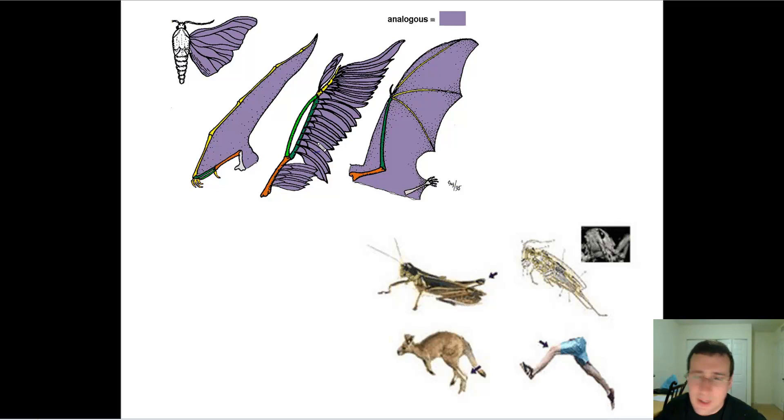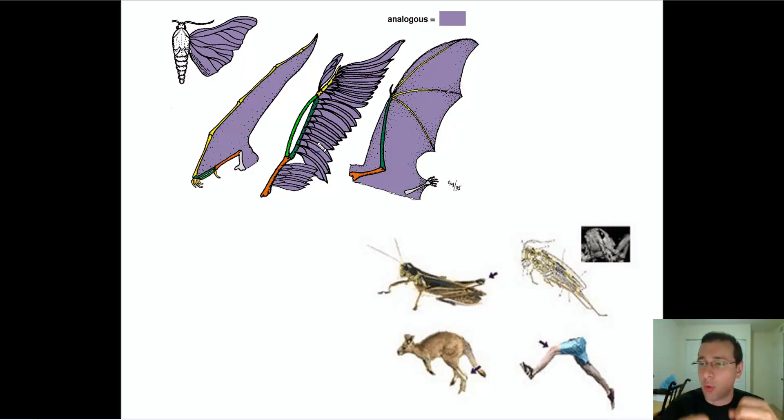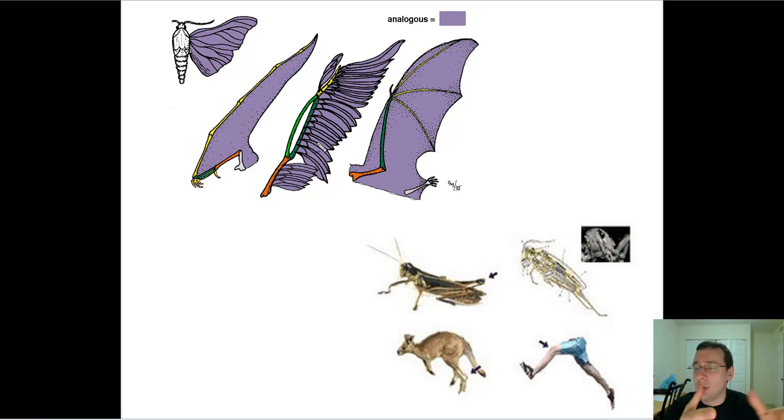Homologous structures proves evolution because it shows that people have common ancestors. So it proves the whole adaptive radiation thing. Analogous structures proves evolution because it proves that pressure from the environment causes selection towards a certain trait over many generations. So either way you look at it, anatomy can be used to actually see this.